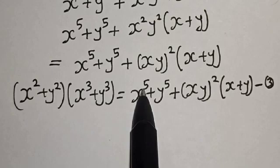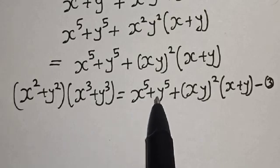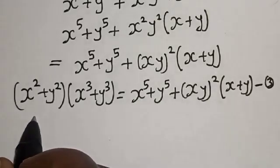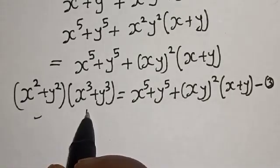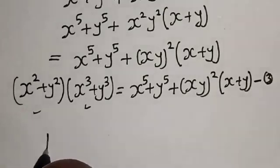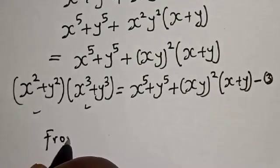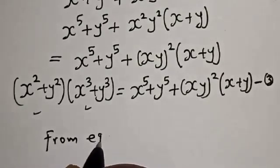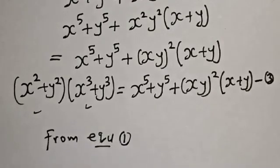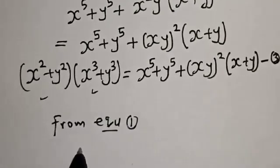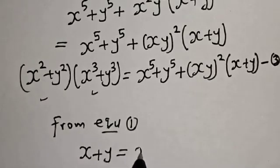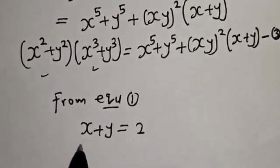So x raised to power 5 plus y raised to power 5 is what we are looking for. We need the value of x squared plus y squared and x raised to power 3 plus y raised to power 3. From equation 1, x plus y is equal to 2. Now let's square both sides.